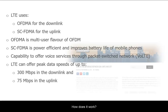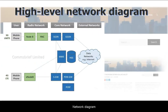LTE also has the capability to offer voice calls through the packet switch part of the network, which enables Voice over LTE. LTE can offer peak data speeds of up to 300 Mbps in the downlink and 75 Mbps in the uplink. LTE Advanced and LTE Pro can offer even higher speeds. Now let's have a quick look at a simplified network diagram to visualise things.